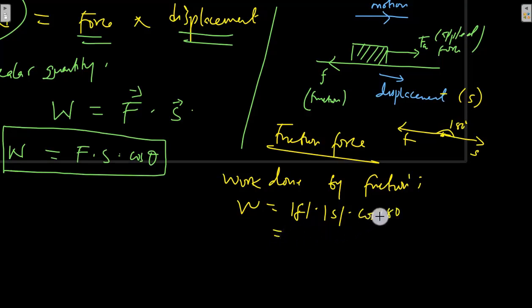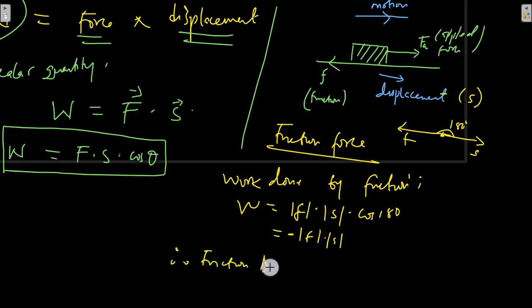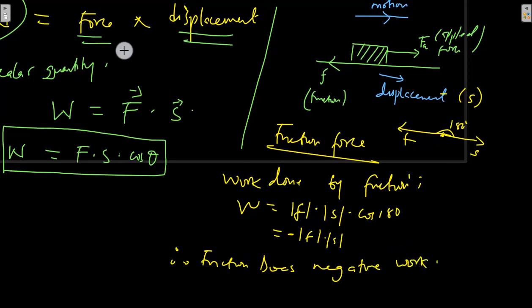Whatever the values of the magnitude of F and the magnitude of displacement are, cos 180° is going to be negative 1, so this is going to be a negative value. That means we conclude here: friction does negative work.